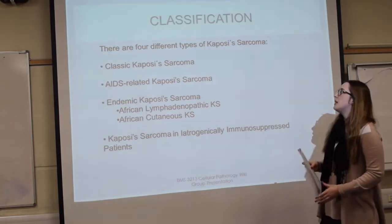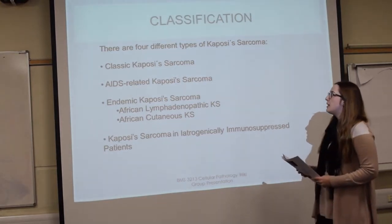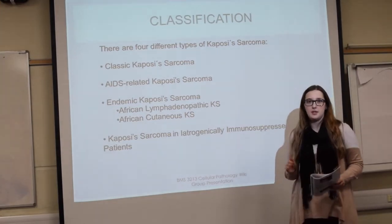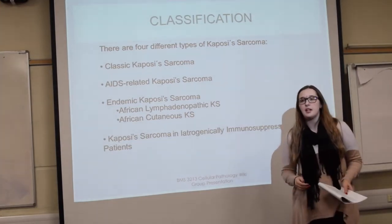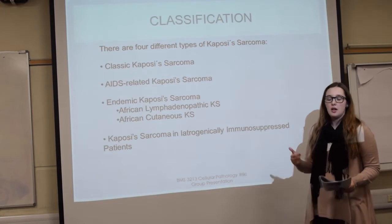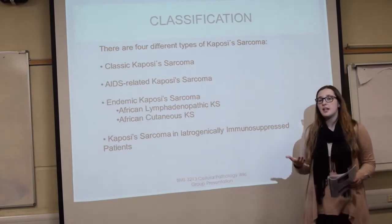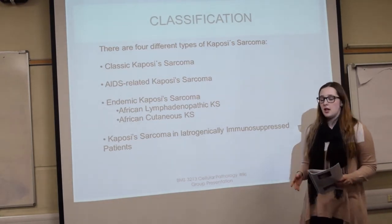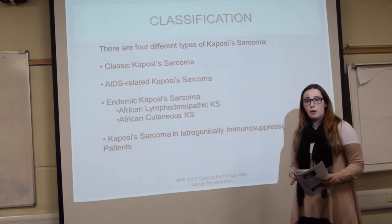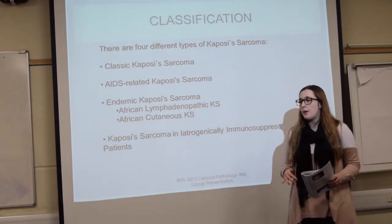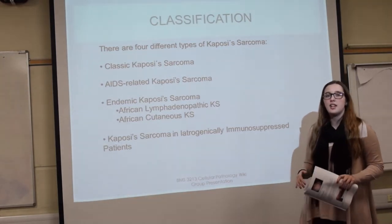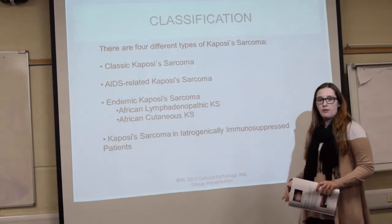The second type is HIV-related Kaposi's sarcoma. This is a very aggressive type that can affect the head, back, trunk, neck, and mucous membranes. The lesions are usually red-purple, and the patches can quickly develop into nodules that can affect lymph nodes.